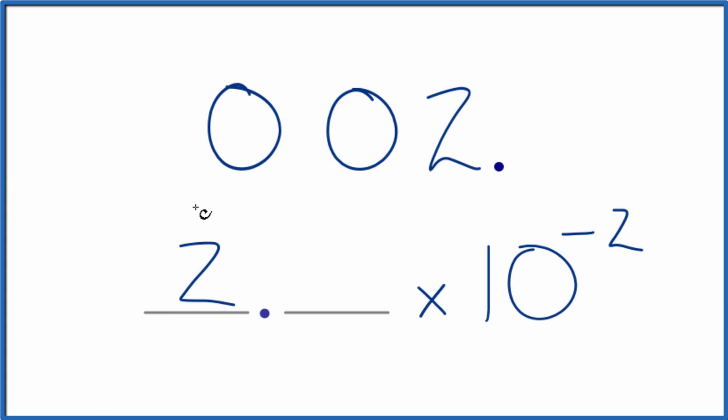But when we convert 0.02 to scientific notation, you get two times 10 to the negative second, or you could call it 2.0 times 10 to the negative second. This is Dr. B. And thanks for watching.